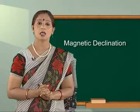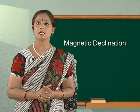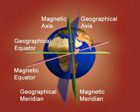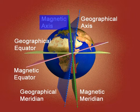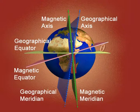Magnetic declination: when a bar magnet is suspended by an unspun silk thread, the magnet's ends do not point exactly along the geographical north-south direction. The line joining the north and south poles of a freely suspended magnet is called the magnetic axis. The small angle between the magnetic axis and the geographic axis is called magnetic declination.